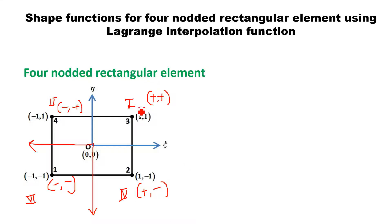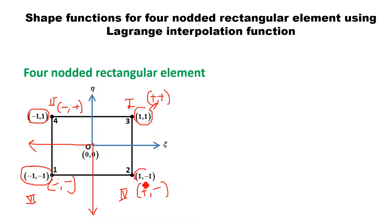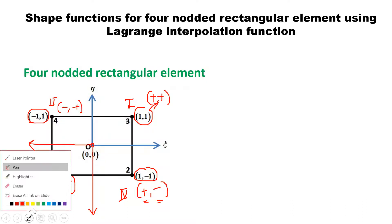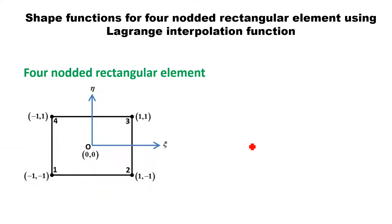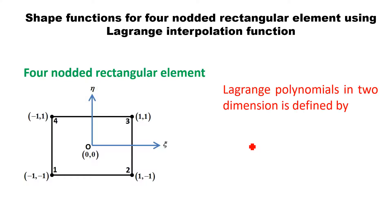Using these signs, the coordinates of node number 3 will be plus 1, plus 1. For node number 1, using the minus-minus sign, coordinates will be minus 1, minus 1. Similarly, in the second quadrant it is minus-plus, so minus 1, plus 1. And coordinates of node number 2 are plus 1, minus 1 using the plus-minus sign. The origin, 0, 0, is at the center of the element. These are the coordinates of the four nodes of the rectangular element.